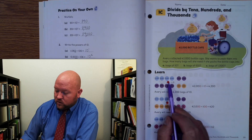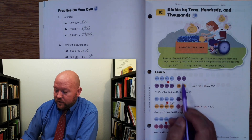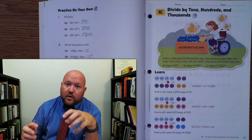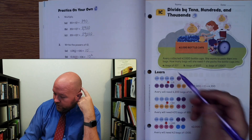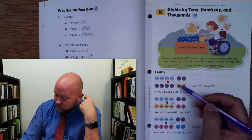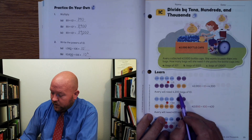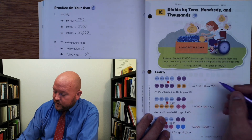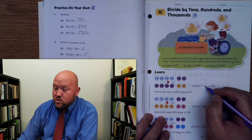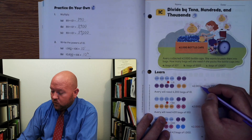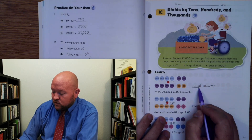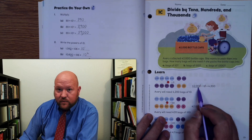Now here they've drawn this for us. What it means is that we're going to depreciate the value of everything by one place value. When you multiply, everything gets bigger by one place value. When you divide, everything gets smaller by one place value. So 10,000 becomes 1,000, and 1,000 becomes 100. So Avery will need 4,200 bags of 10. When you divide by 10, you move the place value over one — you get rid of that zero — and you're left with 4,200.